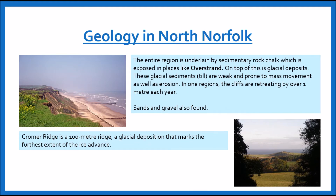So let's start off by talking about geology in North Norfolk. The entire area is actually covered in sedimentary rock chalk, and this is exposed in places like Overstrand, which is this one right there. On top of this we also have a small layer of glacial deposits — that is different rocks brought over through ice sheets, so it might have come from Sweden or Scotland. These glacial deposits, also known as till, which is basically a collection of different rock types, are quite weak and are prone to mass movement, so it's very easy for them to be eroded away, and you can see that here in this image where the cliff is sort of collapsing in on itself.